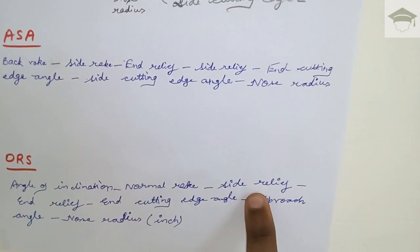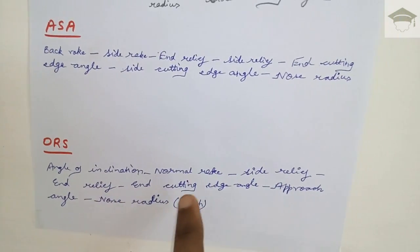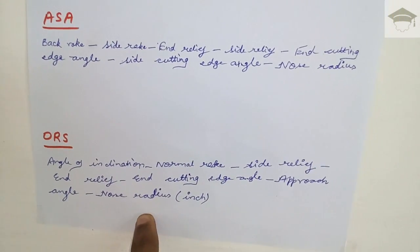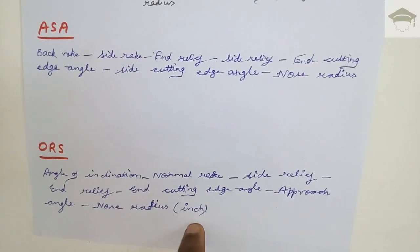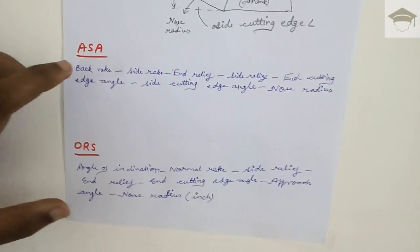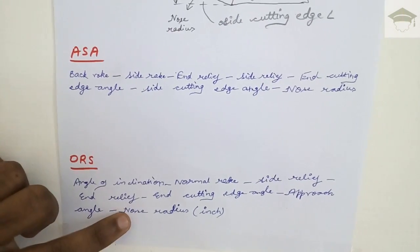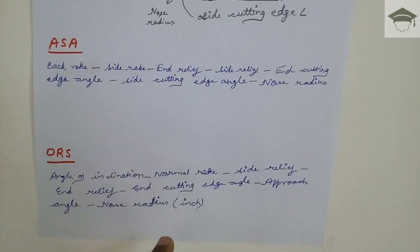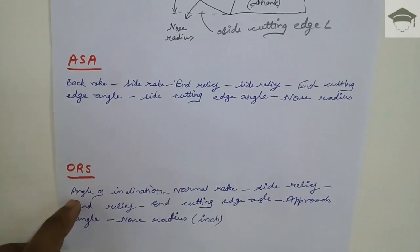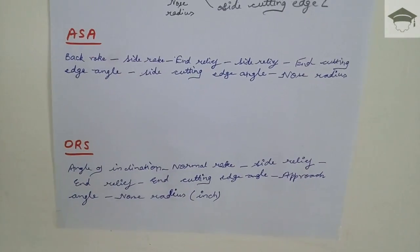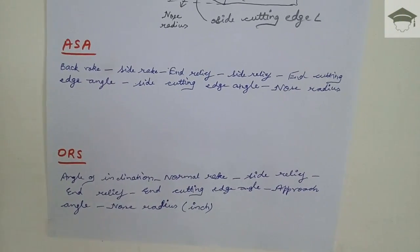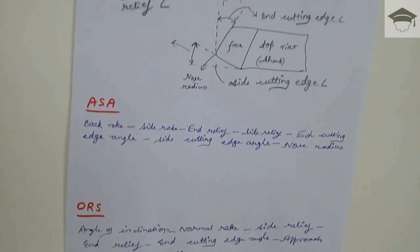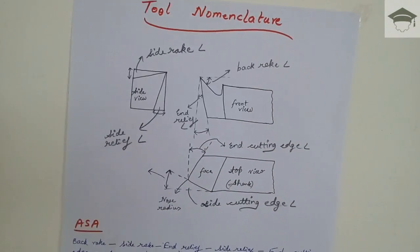In the Orthogonal Rake System (ORS), we write: first the angle of inclination, then the normal rake angle, then the side relief angle, then the end relief angle, then the end cutting edge angle, then the approach angle, and finally the nose radius — mentioned in inches. The basic difference between ASA and ORS is that in ASA the nose radius is in mm or meters, while in ORS it is in inches. Also, in ORS there is an inclination angle, which is the angle between the normal to the tool surface and the plane of projection.